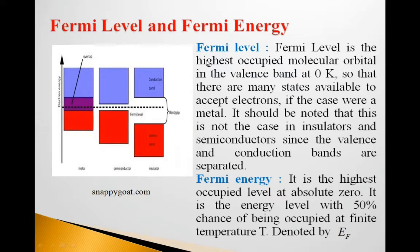So students, what is Fermi level? Fermi level is highest occupied molecular orbital in the valence band at 0 Kelvin temperature. Here, this conduction band and valence band overlap. There are many states available to accept electrons in case of metals. But in case of semiconductor and insulator, the bands are separated.